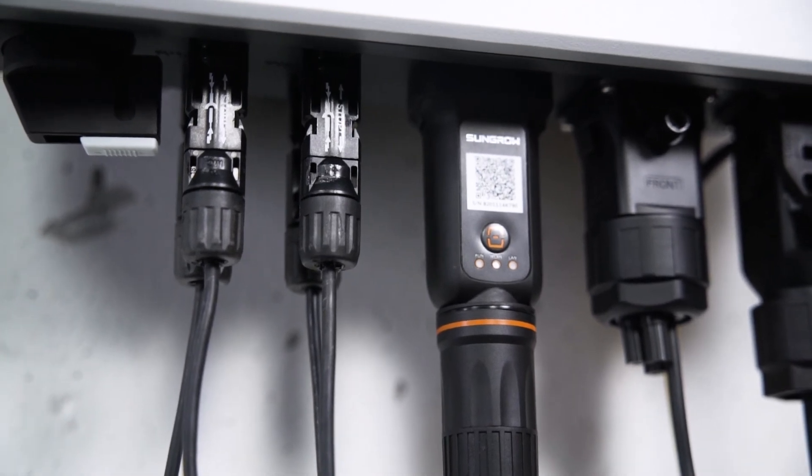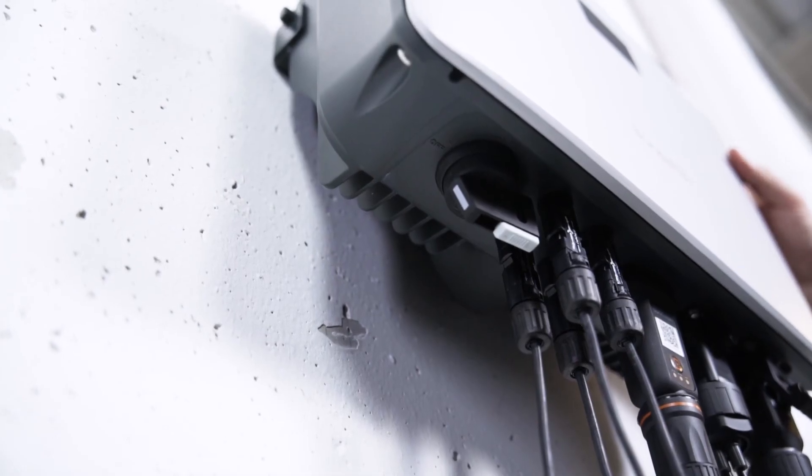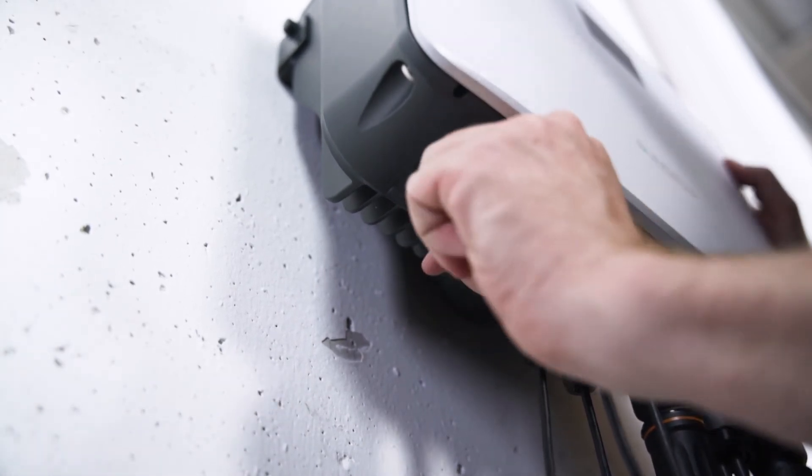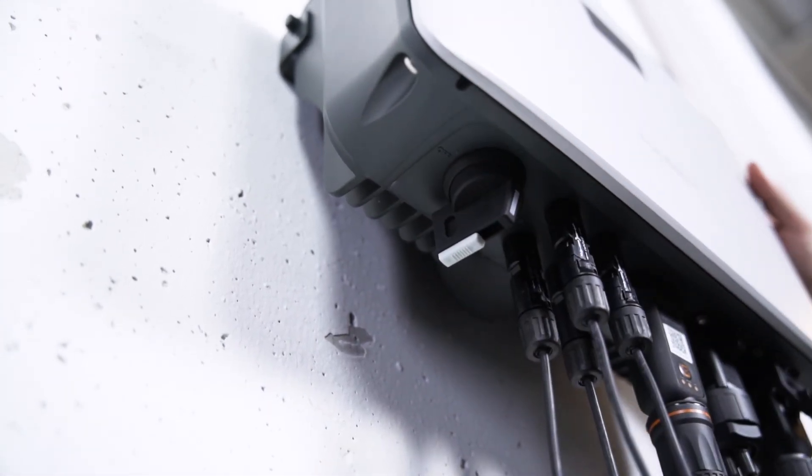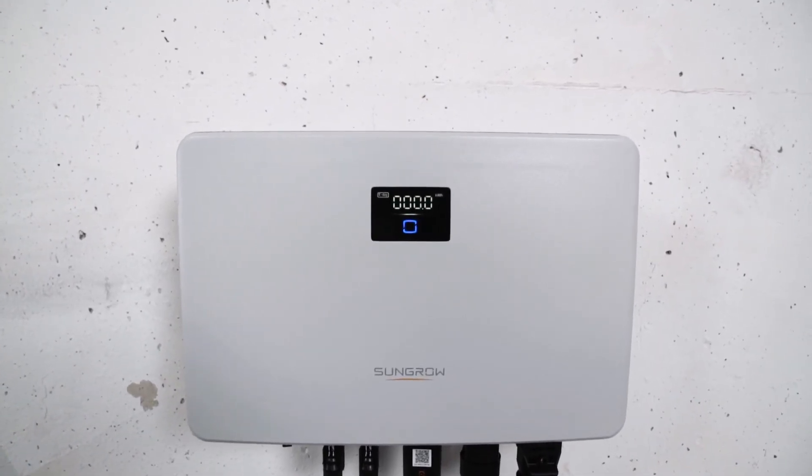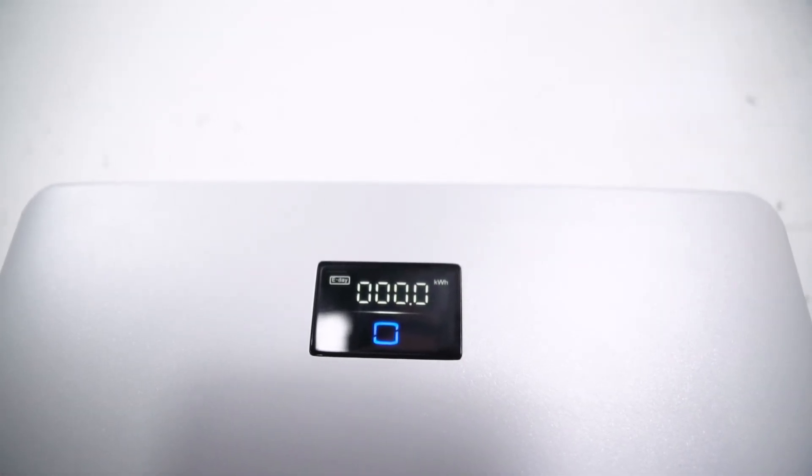Now it's time for commissioning. First, you have to set the DC switch of the inverter to the ON position to connect the inverter to the PV generator. Next, you have to switch ON the AC circuit breaker. A look at the LED light tells you if everything works properly. If the light shines continuously blue, the inverter is ready for use.